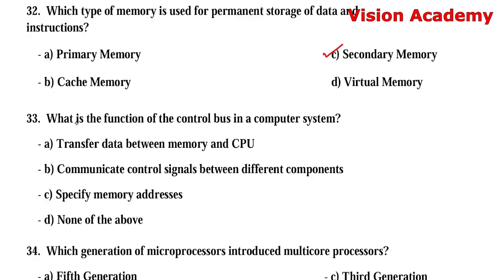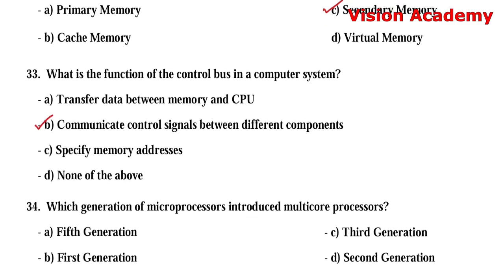Question 33: What is the function of the control bus in a computer system? Option A: transfer data between memory and CPU. Option B: communicate control signals between different components. Option C: specify memory addresses. Option D: none of the above. The right answer is Option B, communicate control signals between different components.